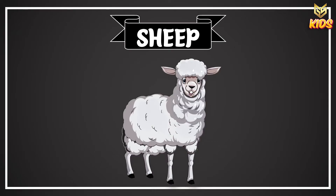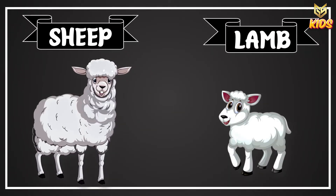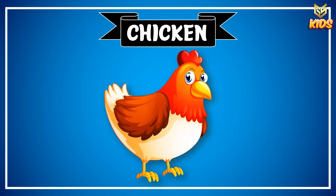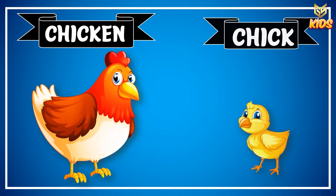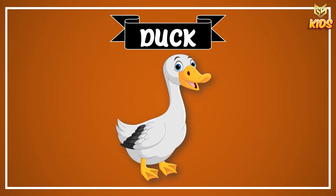This is a sheep. Children, what is this? This is a sheep, and the baby of a sheep is called a lamb. Sheep, lamb. This is a chicken. Yes, what is this, children? This is a chicken, and the baby of a chicken is called a chick. The smaller one is called a chick. Chicken, chick.